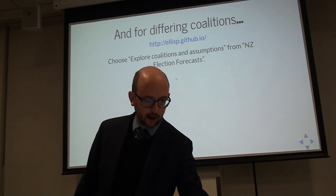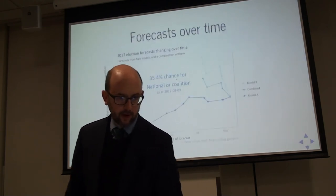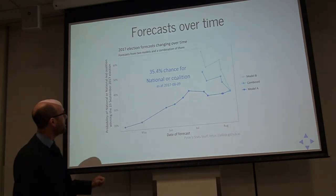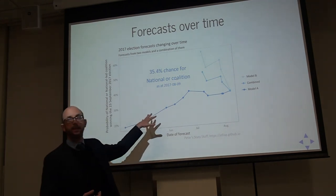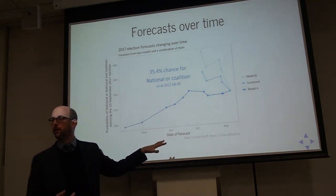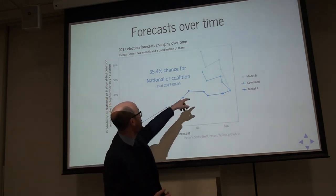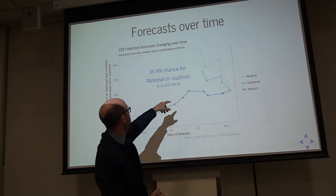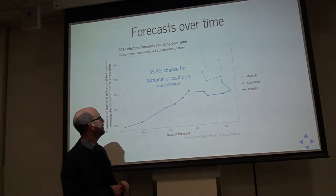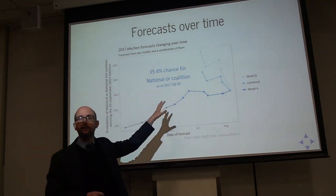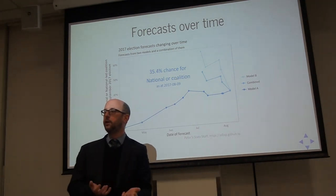So the end game is letting people see a range of probabilities of the number of seats for any given combination of parties they care to choose in their choose-your-own coalition. The rest of the talk is really about how I get there. I've got these two models — Model A and Model B. I basically prefer Model A because it's less volatile, and we'll get into some of the reasons for that later.